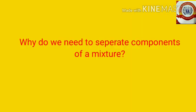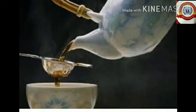Then we studied about the separation of mixtures. Why do we need to separate components of a mixture? Components of a mixture should be separated because some components may not be useful or may spoil the substance, so separation is essential. The first method is filtration, which is used when separating a solid substance from a fluid by passing it through a porous material such as a filter.